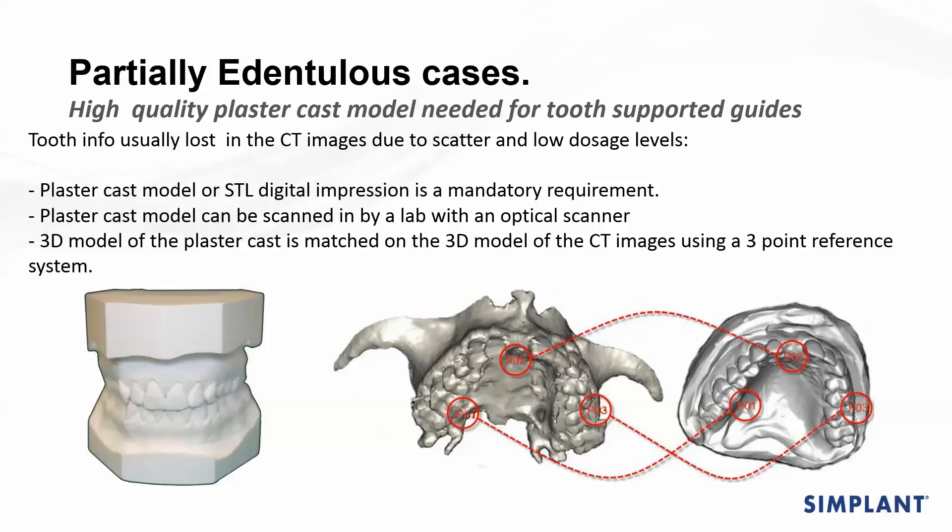Alginate can alter the actual dimensions of the study cast, which will not give you a true accurate positioning of the stent. It could sometimes shrink and not actually fit in the patient's oral environment on the day of surgery, so please make sure your impressions are very accurate.